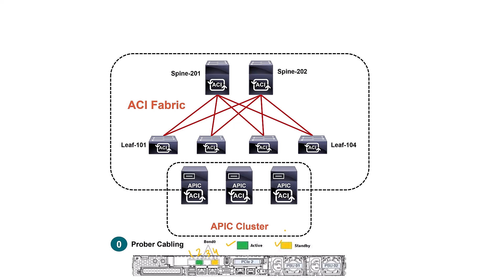Then you need to cable the cluster devices together. The bond one line card — the bottom one — has two interfaces. Pick one and connect it to the other APICs in the same cluster. For out-of-band management, connect all three APIC management ports together using any traditional switch. However, the out-of-band management IP address has not been configured yet — that's what we do in step one.